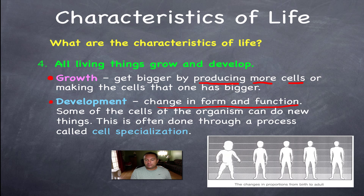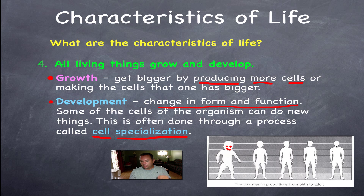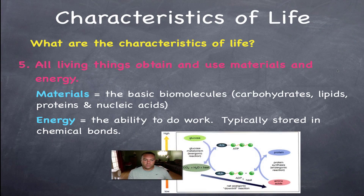During development, cells in your body gain new properties and can do new functions they couldn't do before — through a process called specialization. Look at this picture: notice how the proportions of the body change as you develop into an adult. Babies have giant heads relative to their body size, while adults have heads that are much smaller in proportion. Make sure you know the difference between growth and development — that sounds like a test question.